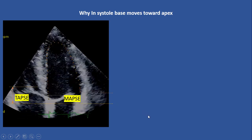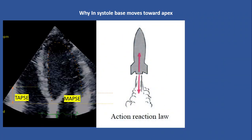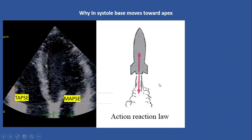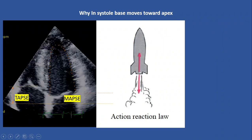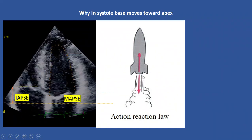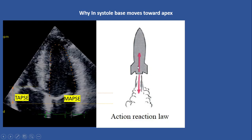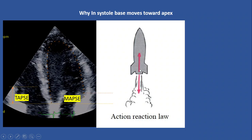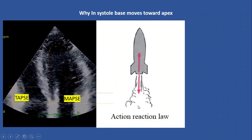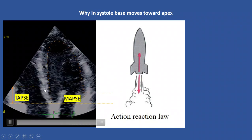The answer is related to Newton's third law — the action and reaction law. For example, here we have a rocket. When the engine burns the fuel, the gas comes out with force. Based on this law, the amount of force of the gas is applied exactly in the opposite direction to the engine, and that causes the rocket to move forward. The same thing happens to the left ventricle and right ventricle — or generally the heart — during systole.